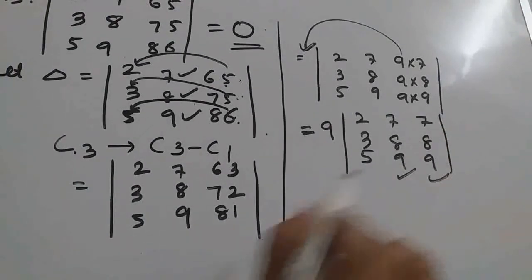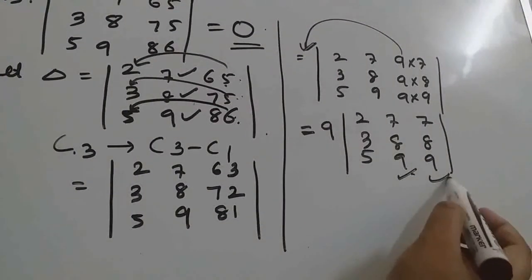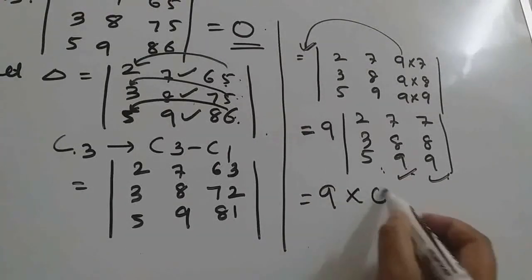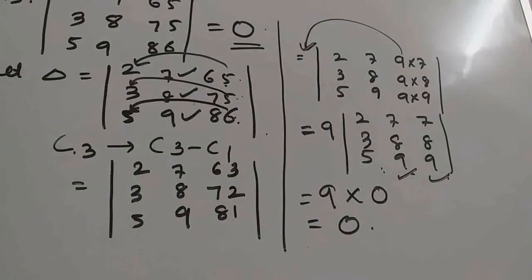So in this you have proved that two columns are equal. So that determinant value will be definitely 0. So 9 into 0 is 0, which is right hand side.